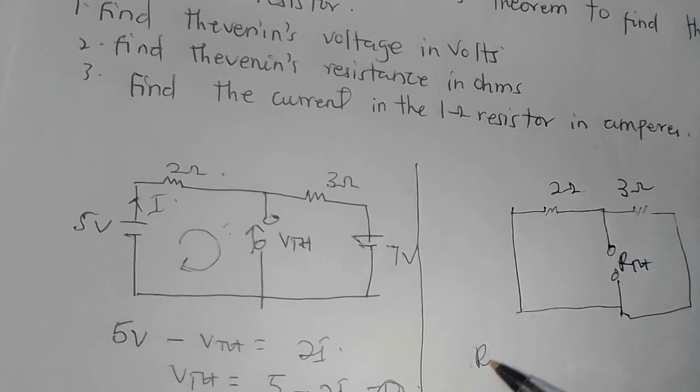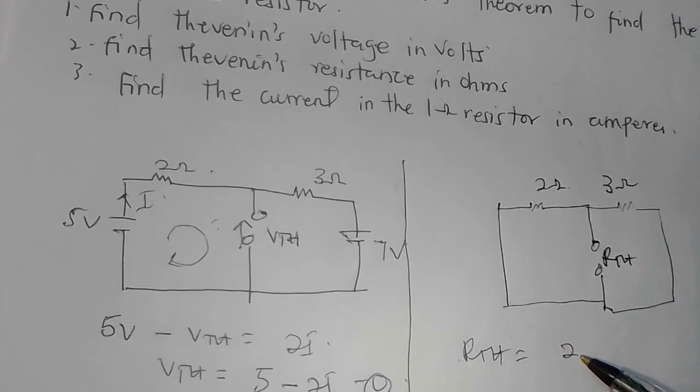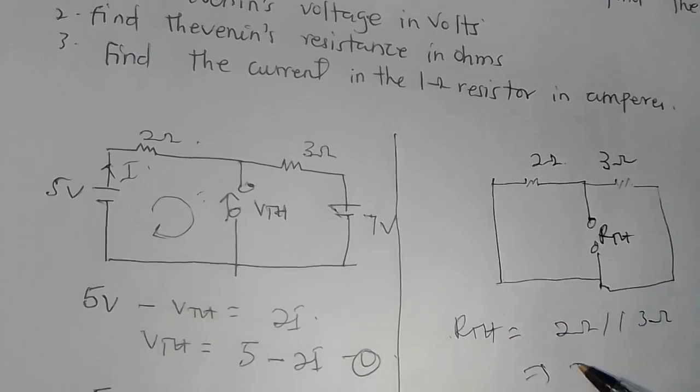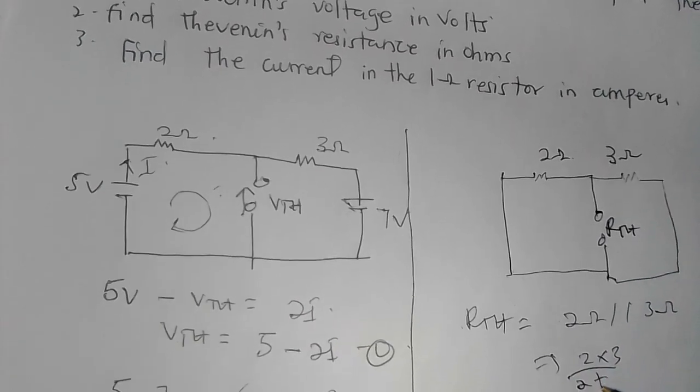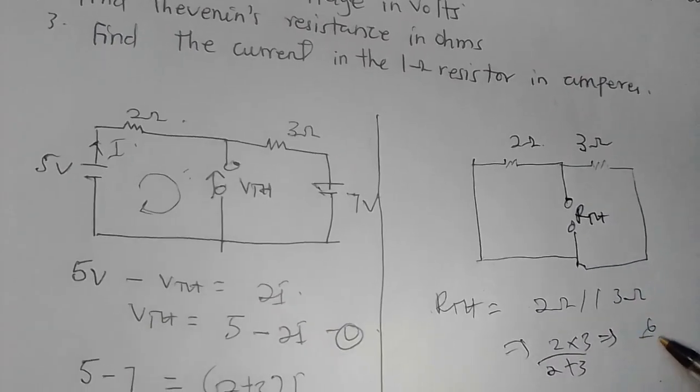But when I traverse through them, I'm not going to meet any other elements, so they are in parallel. So my RTH is simply equal to 2 ohm parallel to 3 ohm, which is 2 times 3 over 2 plus 3, giving me 6 over 5, which is 1.2 ohms.